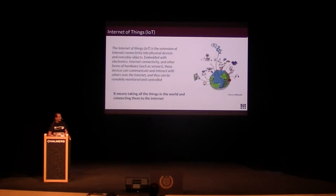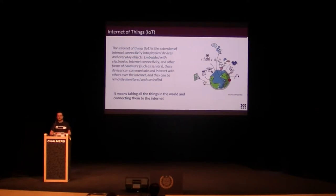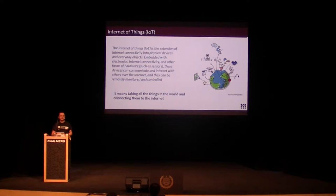So, Internet of Things. In short, it means taking all the things in the world and connecting them to the internet — which sounds both exciting and frightening at the same time. Previously, most things connected to the internet were servers or enterprise-grade server parks and data centers, with fairly well-known security practices. But now anyone can buy a Raspberry Pi and connect it to the internet, which creates a lot of opportunities but also a lot of problems.